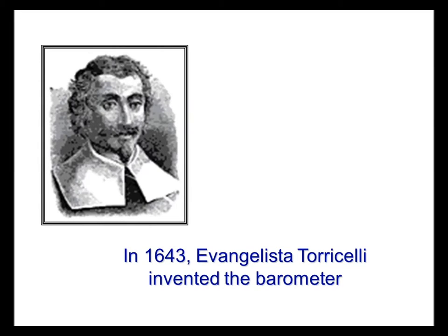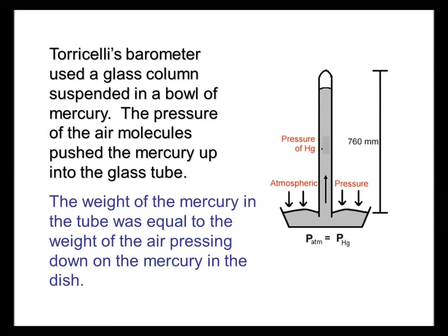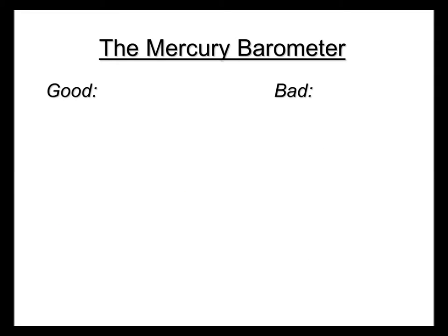This is the first person to invent a barometer. The way it worked was a bowl of mercury with a glass tube submerged in it. The pressure of the air molecules would push the mercury up the tube as air pressure increased, or down if it decreased. The weight of the mercury in the tube was equal to the air pressure pushing down. So as atmospheric pressure increases, the mercury in the tube rose.